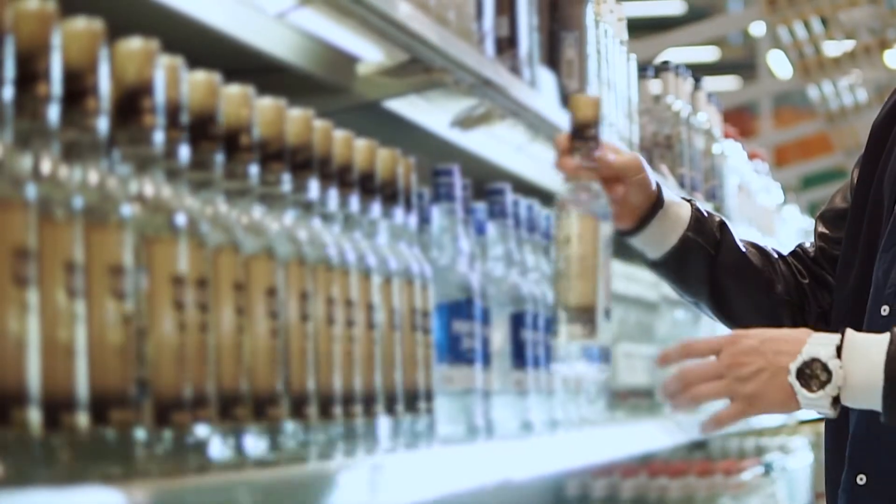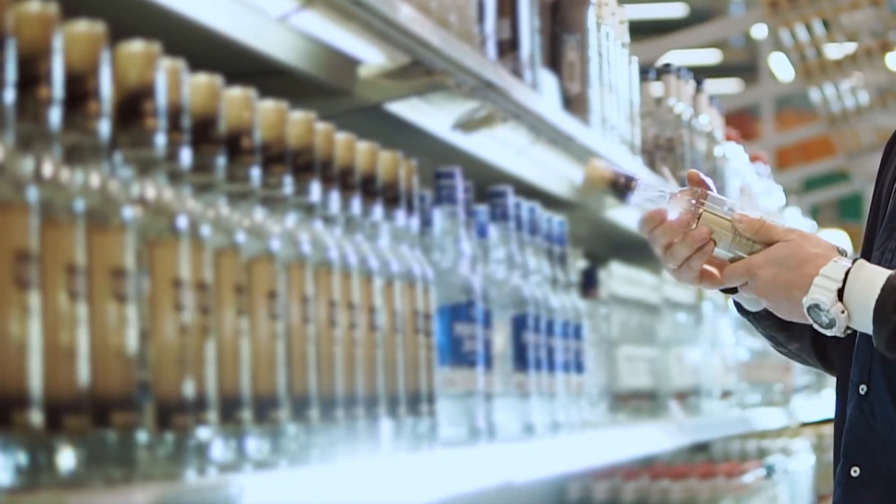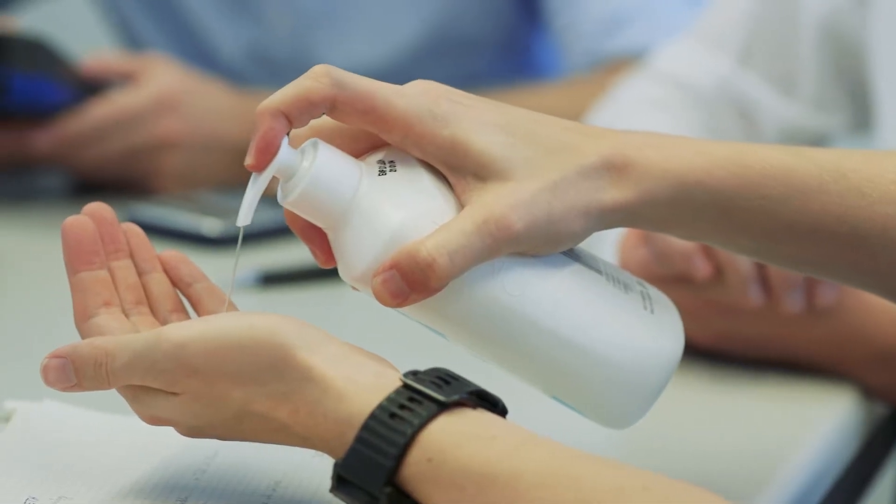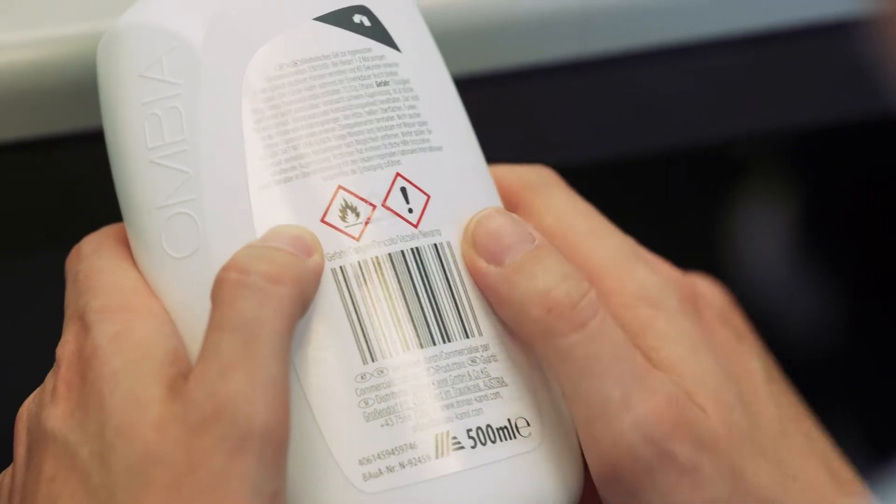The substance is often drunk in the form of adulterated alcohol in third world countries. For this reason, methanol content in food, beverages and other consumer products, such as hand sanitizers, is strictly regulated worldwide.